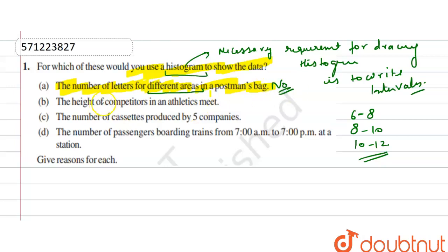Now second is the height of competitors in an athletics meet. Yes, we can make the interval of height like 5 foot 8 inch, 6 foot to 6 foot 8 inch like this. So we can make intervals. Yes, we are able to make a histogram.